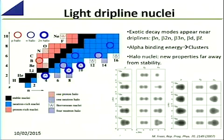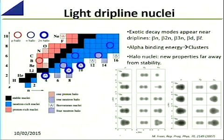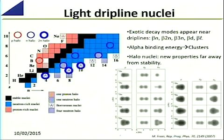What I'm going to concentrate on today is the effect of clusters. The alpha particle is one of the most — in fact the most — bound nucleus there is. In calculations for beryllium isotopes, the proton density always corresponds to two clusters — two alpha clusters — bound by the distribution of neutrons.